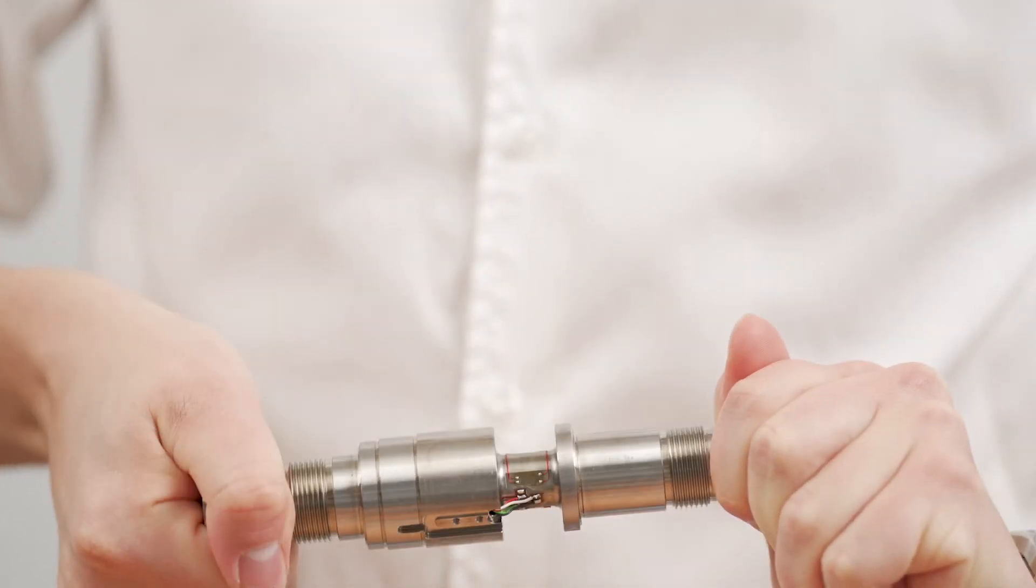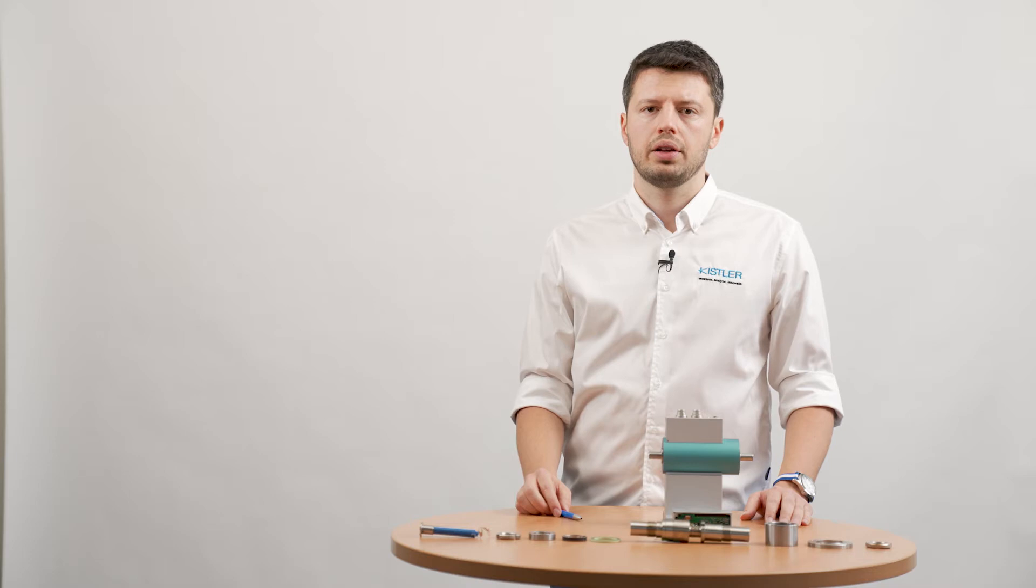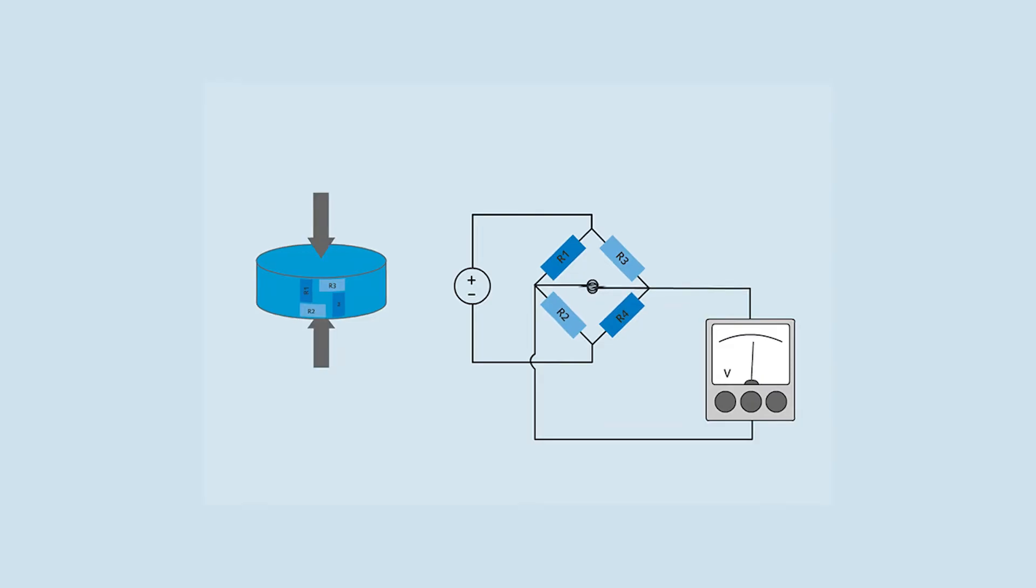If a torque is applied to the measuring shaft, two strain gauges are always stretched and the other two compressed, causing the resistance of the strain gauges to change in opposite direction. From this change in resistance the elongation of the strain gauges and thus the acting torque can be derived.